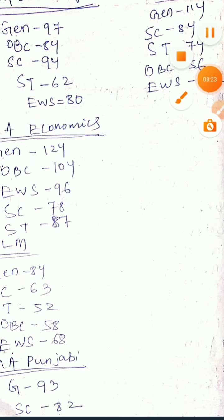For MSc Life Science Bioinformatics: the General cutoff is 235, SC is 216, ST is 212, EWS is 175.